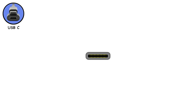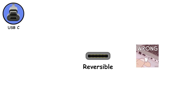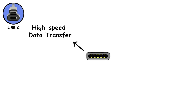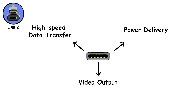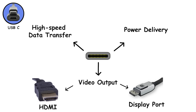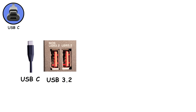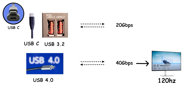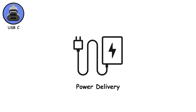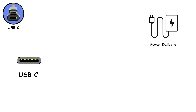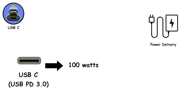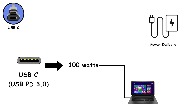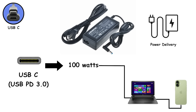What makes USB-C special is that it's reversible — no more flipping the cable three times before it finally fits. It supports high-speed data transfer, power delivery, and even video output through standards like DisplayPort or HDMI alternate modes. USB-C with USB 3.2 can hit 20 gigabits per second, while USB 4 bumps that up to 40 gigabits per second — enough to drive a 4K monitor at 120Hz or two 4K displays at once. Power delivery is another game-changer: USB-C can deliver up to 100 watts (USB PD 3.0), enough to charge laptops that used to need bulky proprietary adapters.